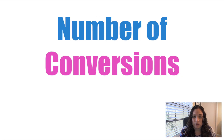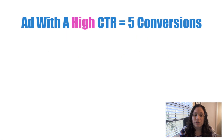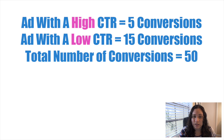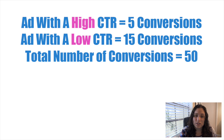The second element to look at is the number of conversions. You want to look at all of the ads within one campaign and compare them to the overall number of conversions. For example, if you have an ad with a really high CTR but only five conversions, and another ad with a low CTR has 15 conversions, and the total conversions for that campaign is 50, there are different things you can do to increase conversions for the high-CTR ad and to increase CTR for the ad with the most conversions.